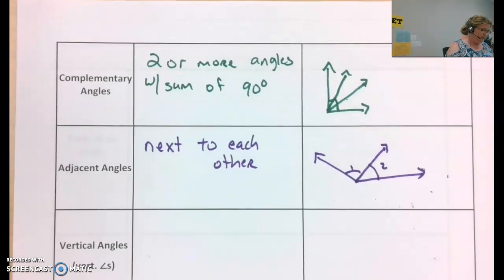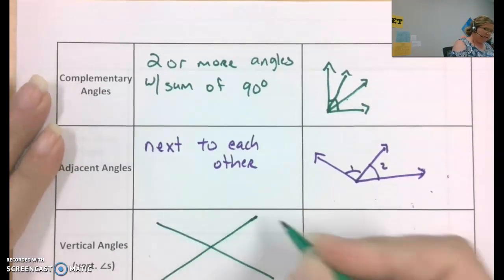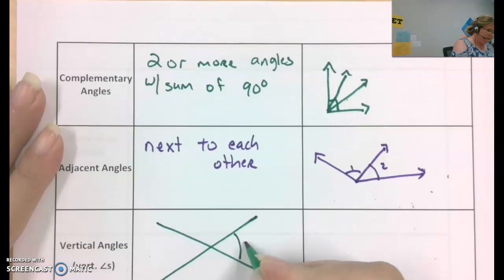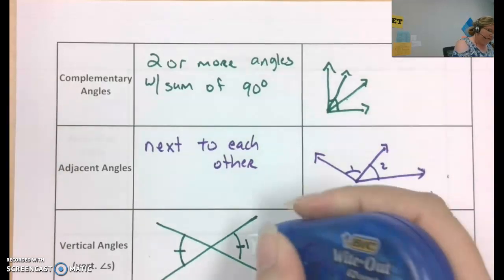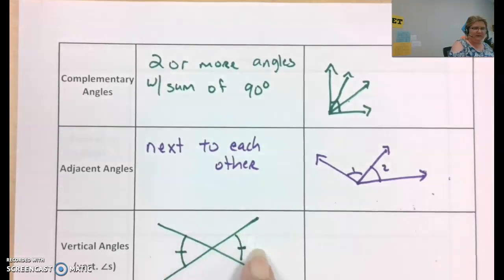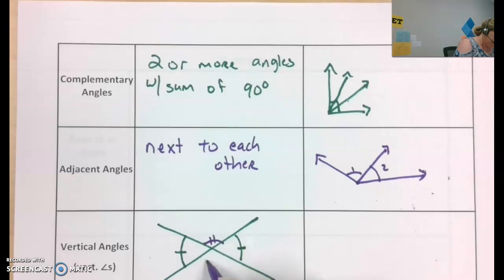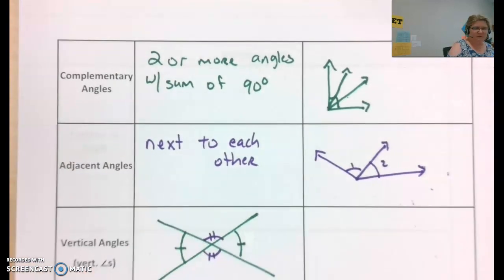The next relationship is vertical angles. That looks like a big X. This angle and this angle are equivalent to each other. This is geometry notation indicating that these two angles have the same measure. And then this angle and this angle also have the same measures. So these are equal, and these are equal. They are not all equal to each other. They could be, but they don't have to be.